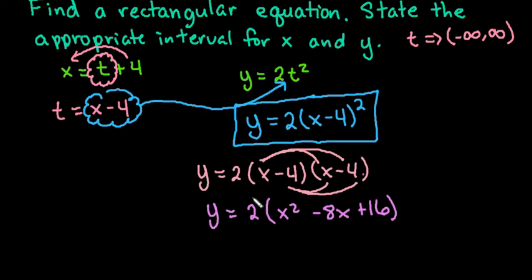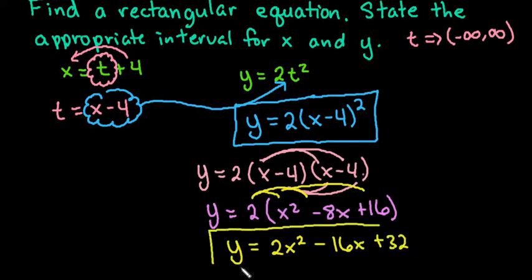And my final step, if I wanted to expand it, write it in expanded form, we would just say that y equals 2x squared minus 16x plus 32. So either form is an acceptable answer or a rectangular equation for this parametric equation.